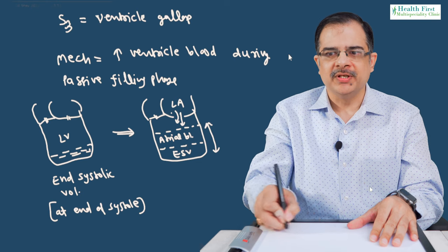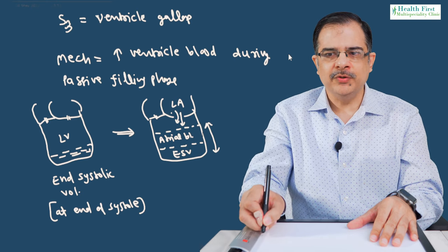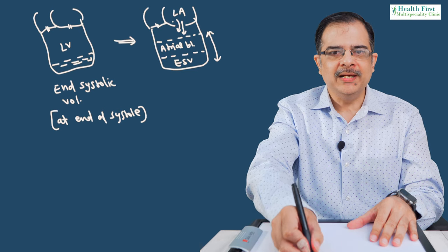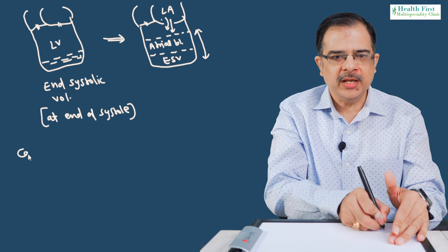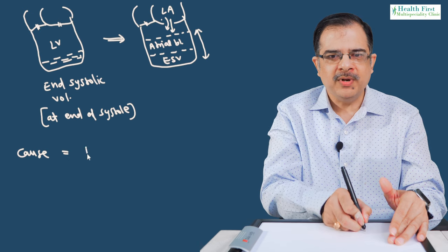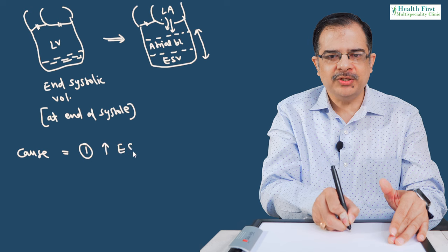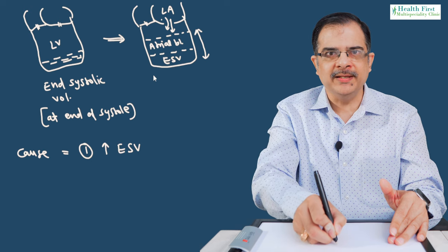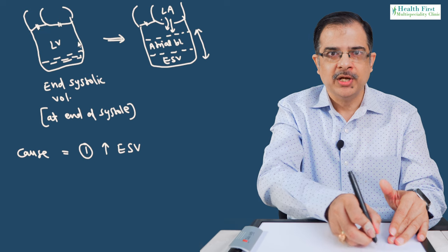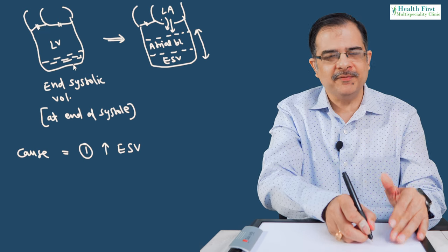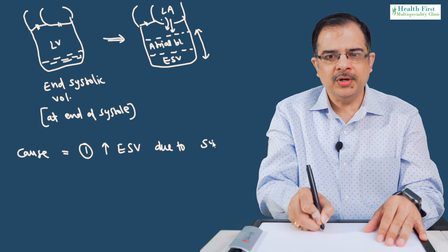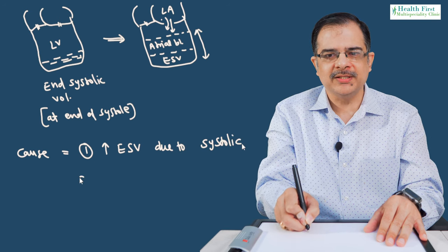When will this blood volume increase? The cause for increase in ventricular blood — which causes S3 — can follow two mechanisms. Cause number one: it could be increased end systolic volume. This end systolic volume increases when the ejection fraction of the ventricle is reduced, meaning less blood is ejected and more is retained. This occurs due to systolic dysfunction of the ventricles.